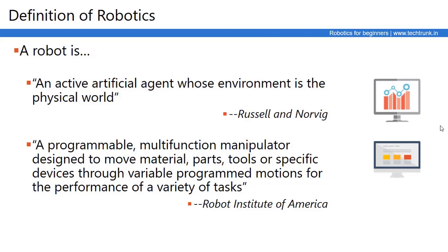The very first thing is the definition of Robotics, or we can say what a Robot exactly is. A Robot is a Machine or an Agent — it could be a Software Agent, it could be a Hardware Agent or a Machine — which can perform a variety of tasks in an intelligent way, as humans do.